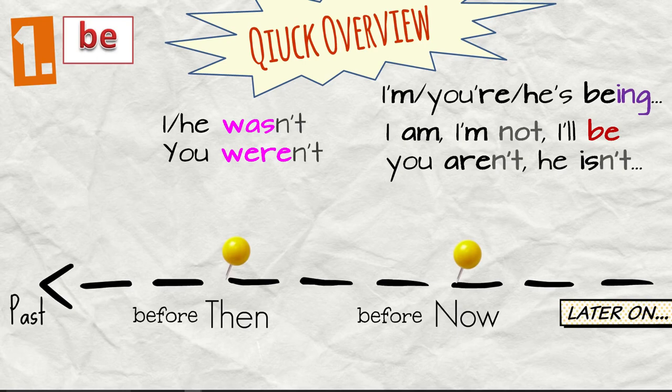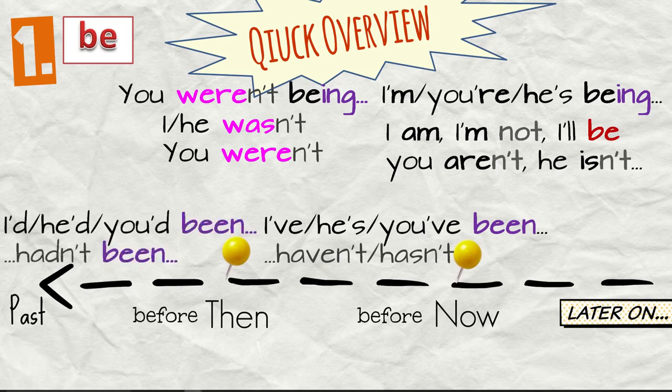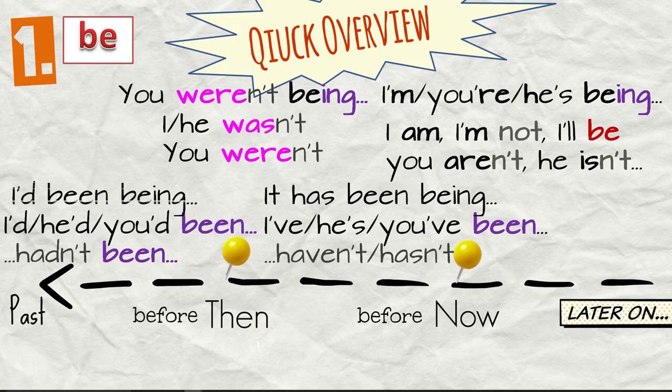We can say you were being or you weren't being. Then we have I've been, he's been, you've been, or the negative I haven't, hasn't been, and I'd been, he'd been, you'd been, and the negative hadn't been. We also have the form, for example, we say it has been being, or I'd been being, but these are not very common. Still we have to mention them here.